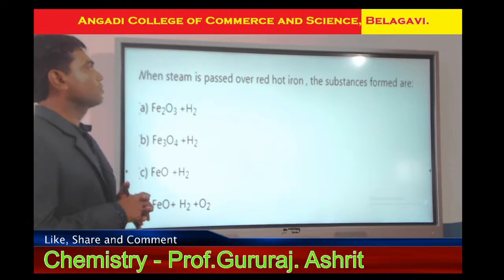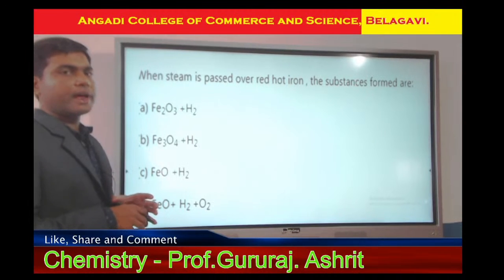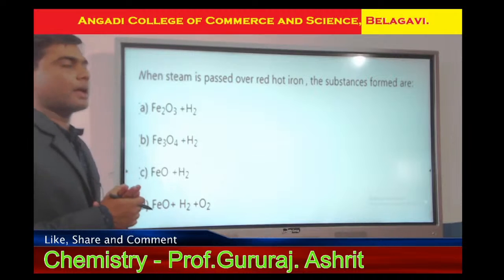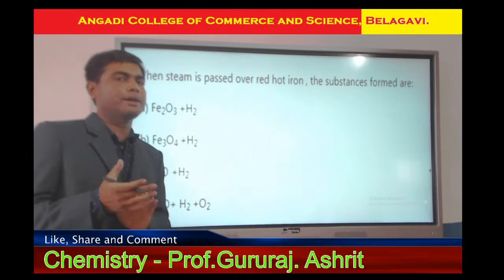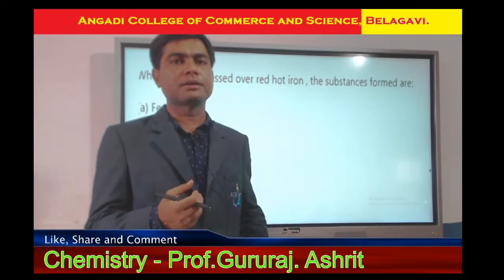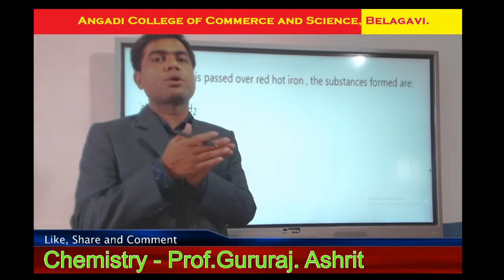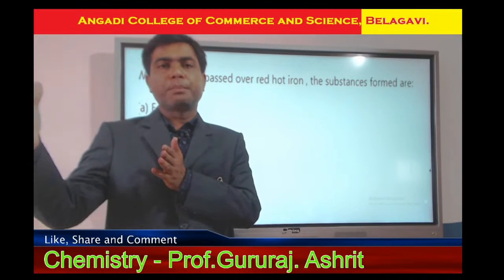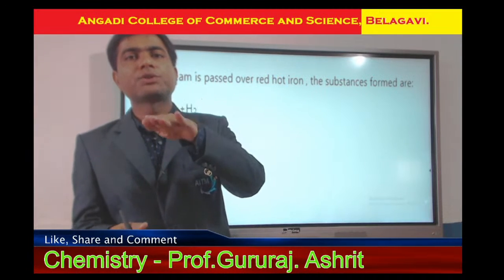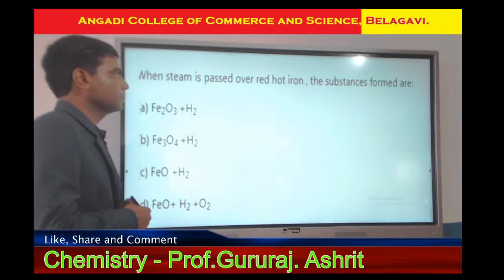Now we go to the first question, which is related to the reaction or chemical properties of transition elements. D block elements are called transition elements, as they are present between S block and P block and the metallic property gradually decreases to non-metallic character.